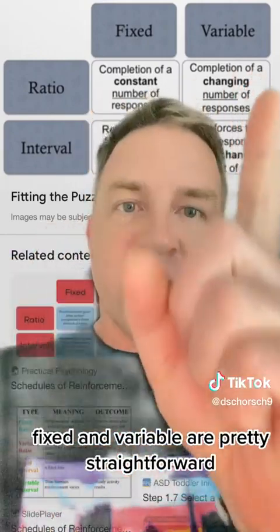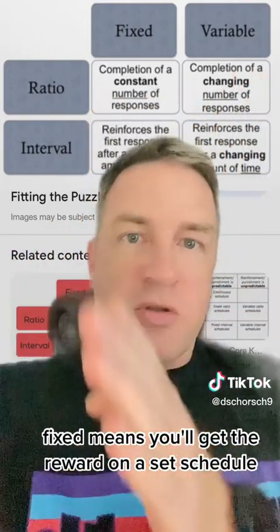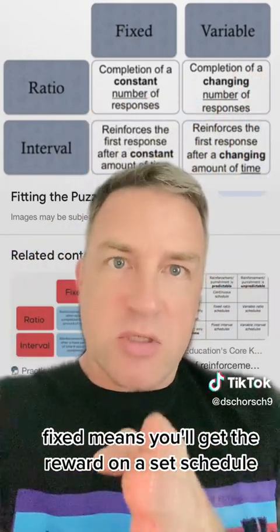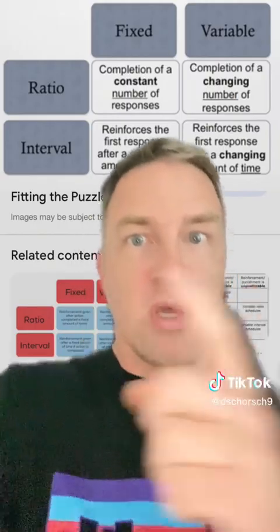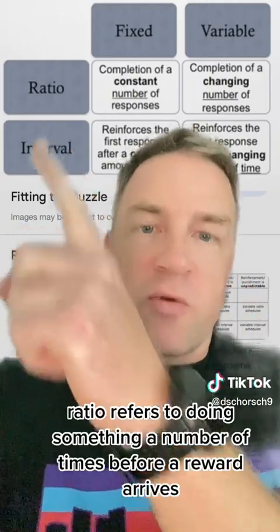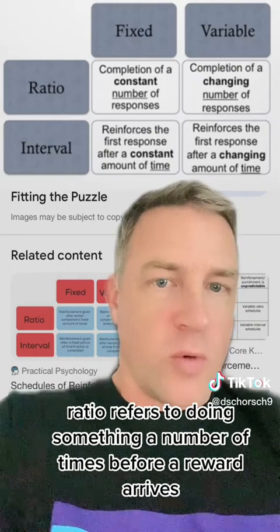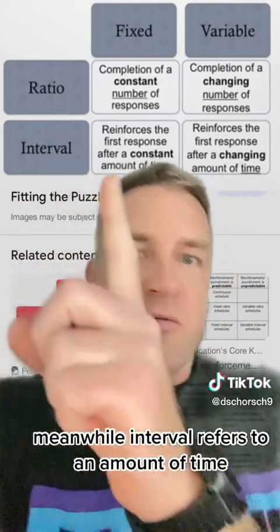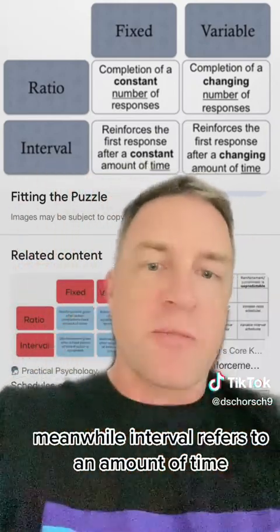Fixed and variable are pretty straightforward. Fixed means you'll get the reward on a set schedule, and variable means that it varies. Ratio refers to doing something a number of times before a reward arrives, while interval refers to an amount of time.